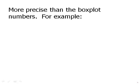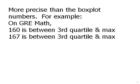think about GRE math scores. On the GRE math section, a score of 160 is between the third quartile and the max. A score of 167 is between the third quartile and the max. Well, saying it like that makes it sound like those two scores are equivalent, as if they're more or less interchangeable. And, of course, that's not the case at all.